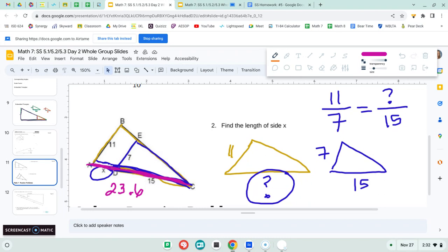So what I found was this full length. So in order to find X, I'm going to take 23.6 and subtract 15 from it. So X ends up being about 8.6 for that one.